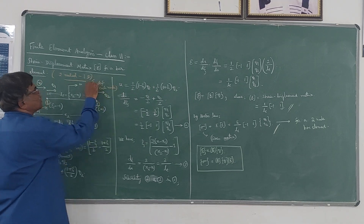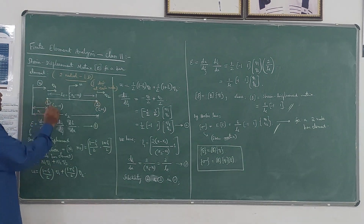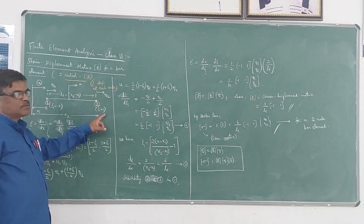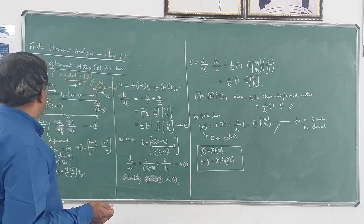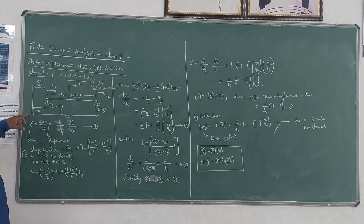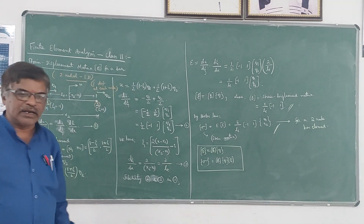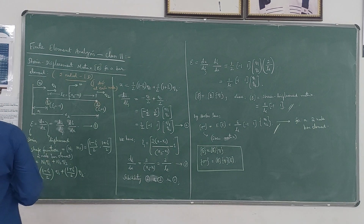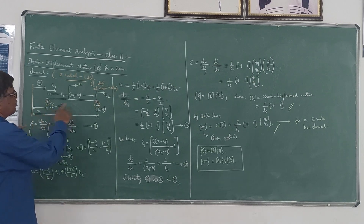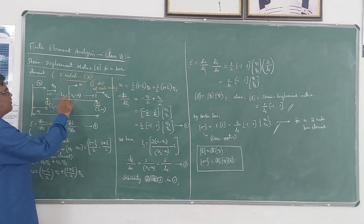Q1 and Q2 are the nodal displacements along the axis of the element. At node one, the natural coordinate zeta is taken as minus one, and at node two, zeta is plus one, so it varies from minus one to plus one. Taking a reference vertical axis, x is the global coordinate. The distance from the reference axis to node one is x1, and to node two is x2. Therefore, x2 minus x1 gives the length of the element, Le.